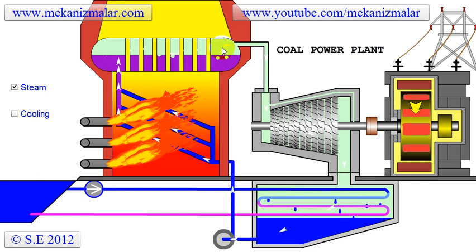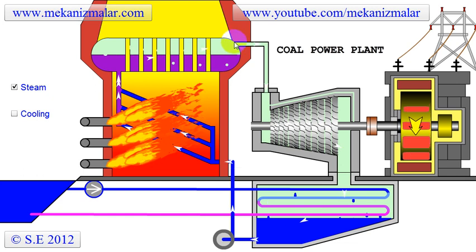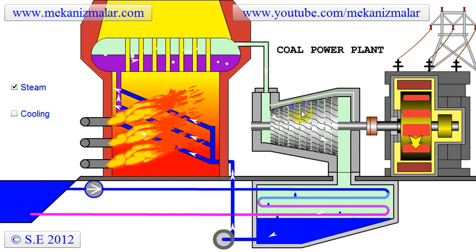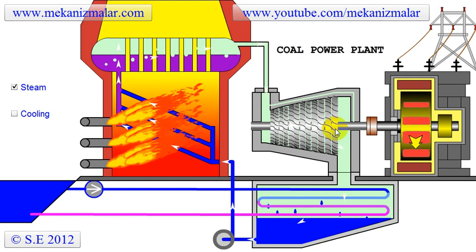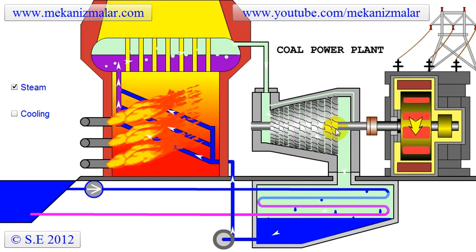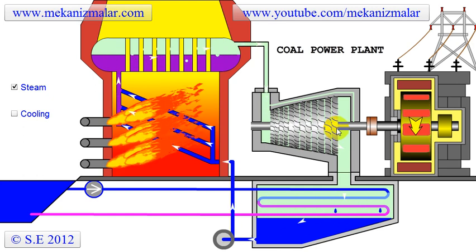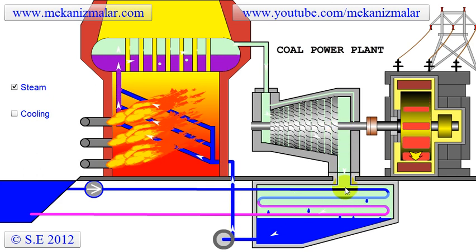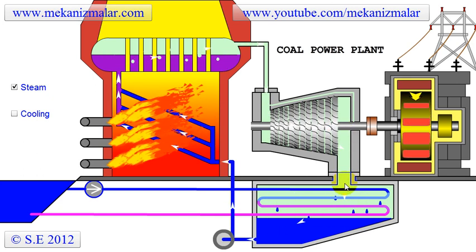The high pressure steam obtained in the boiler is sent to the steam turbine, which passes the steam between fixed and rotating sections, converting the energy stored in the steam to mechanical energy. The steam leaves the turbine at close to vacuum pressure, near condensation temperature.